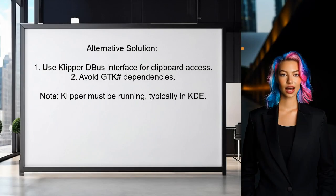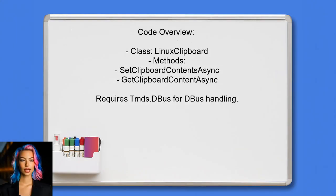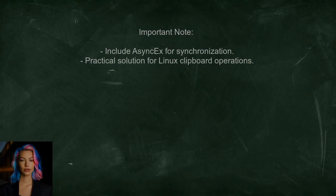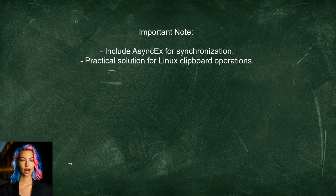An alternative approach for copying to the clipboard on Linux involves using the Clipper D-Bus interface. This method avoids dependencies on GTK and command-line tools that may not be installed by default. First, create a Linux clipboard class that inherits from a generic clipboard. Then implement methods to set and get clipboard contents using the Clipper D-Bus interface, including async synchronization if needed.